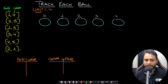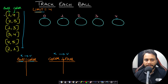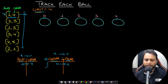For query (1, 4): ball 1 gets color 4. Color 4 is not in the color-frequency map, so insert it with frequency 1. The size of the color-frequency map is 1, so return 1. For query (2, 5): ball 2 gets color 5. Insert color 5 with frequency 1. The size is now 2, so return 2.